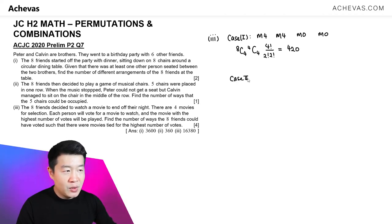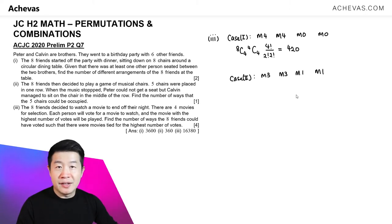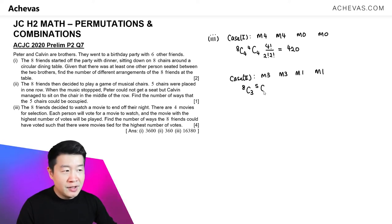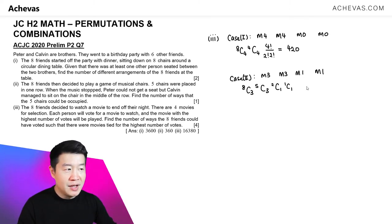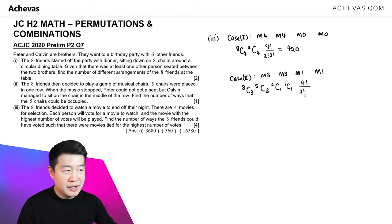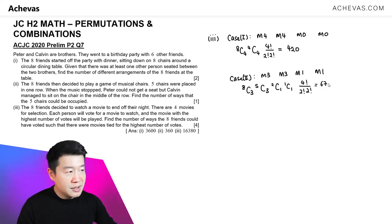Another case: one movie gets 3 votes, another gets 3 votes, another gets 1 vote, and the last gets 1 vote. Out of 8 friends, choose 3 for the first movie, leaving 5; choose 3 for the second, leaving 2; choose 1 for the third, and the last 1 for the final movie. For the arrangement across all 4 movies: 4! divided by 2! (identical 3-vote movies) divided by 2! (identical 1-vote movies). This gives 6,720.